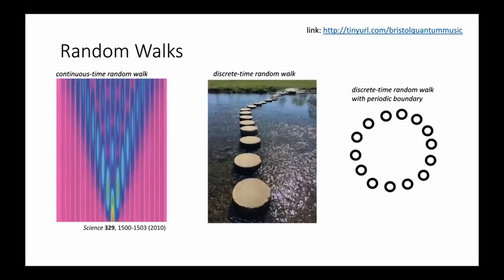So, random walks. We deal with light in our research, and one way people realize random walks with light is by placing waveguides very close to each other, so light injected into one port can tunnel from one waveguide to another — a continuous-time random walk. There's a paper from our group demonstrating this with entangled photon states. But for making music, we thought it made more sense to think about a discrete-time random walk, and the image I want you to have is that of stepping stones.